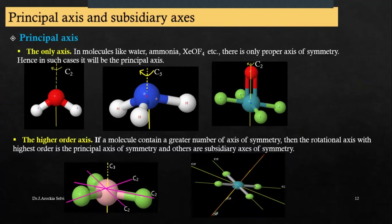Now, we should be knowing a few other terminologies. One is the principal axis. The other one is the subsidiary axis. So what is the difference between them? How to differentiate?